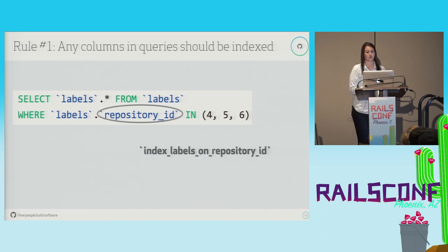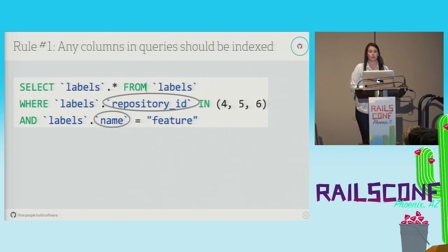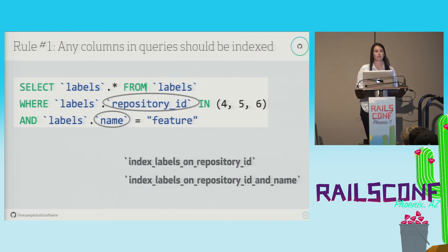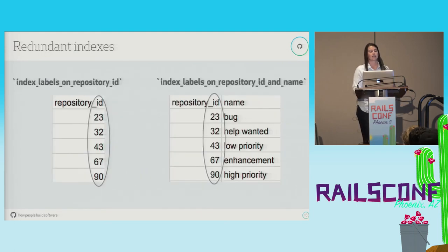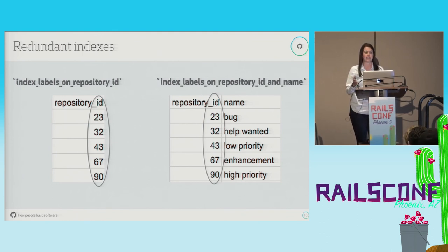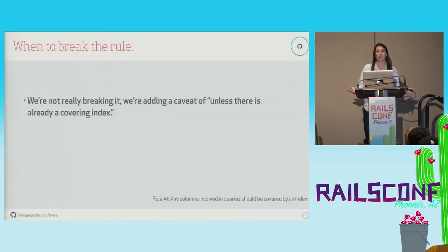A bit later we might add to this query: we want labels with a repository ID of four, five, or six, and with the name 'feature'. Your first instinct might be to add an index over repository ID and name — and once again that's a great thought. But now our index over repository ID is redundant. A redundant index is basically an index that's already contained within another index. Both indexes are sorted based on repository ID as the leftmost column, so any query only concerned with repository ID can actually use the index over repository ID and name to satisfy that query. We no longer need the index over repository ID only. We're not really breaking the rule — we're just adding the caveat: unless there's already a covering index.